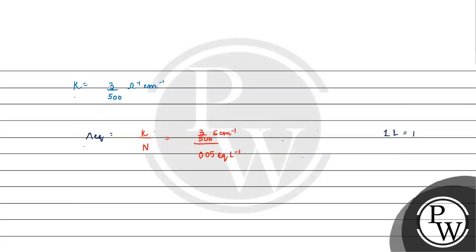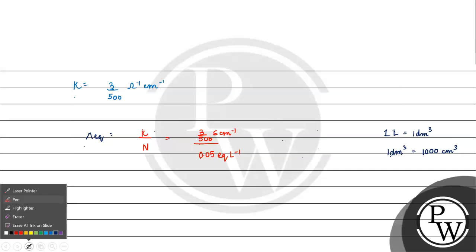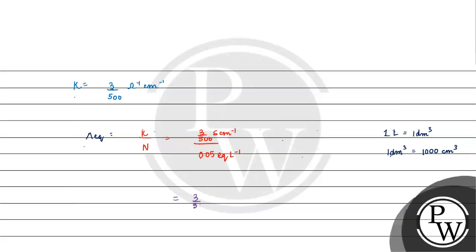We can convert liters: 1 litre is equal to 1 decimetre cube, and 1 decimetre cube is equal to 1000 centimetre cube. So we write normality in cm³. We get 3 upon 500 ohm inverse cm inverse, divided by 0.05 equivalent per 1000 centimetre cube. This gives us 1000 by 0.05 into 500, in units of ohm inverse cm inverse cm³ equivalent inverse.